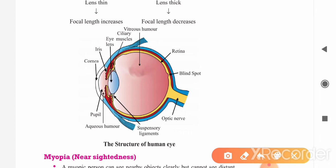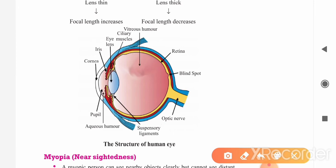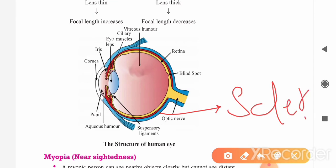Sabse pehle hum baat karte hain jo hamari human eye hai. Isme aap dekh sakte hain total teen layers hain - ek blue mein, ek red, aur ek yellow mein. Basically, in teen layers mein - jo sabse pehle blue layer hai, yeh students hoti hai hamari sclera. What is sclera? This is sclera, and this is our cornea formation here. So the sclera layer's formation is the cornea - the outermost part. The first is cornea, which permits light to enter.